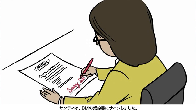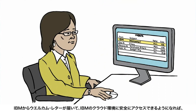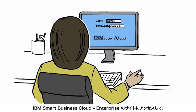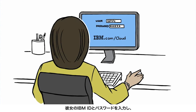Savvy Sandy fills out the IBM contract. Once she receives a welcome letter and secure access to IBM's cloud environment, she's ready to start working. She goes to the IBM Smart Business Development and Test on the IBM Cloud web page.